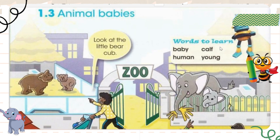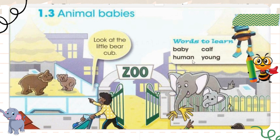The words we are going to learn are: baby, calf, human, and young. Baby is spelled B-A-B-Y. Calf is pronounced as 'calf' — the L is silent, we do not produce the sound of L while pronouncing calf. It is spelled C-A-L-F. Human is spelled H-U-M-A-N. Young is spelled Y-O-U-N-G.